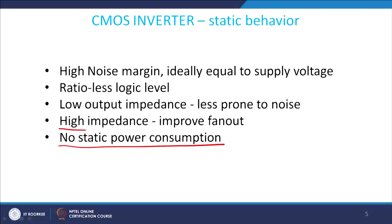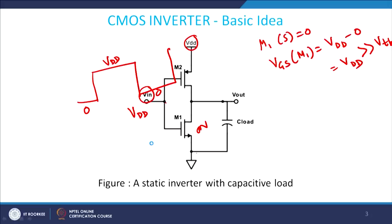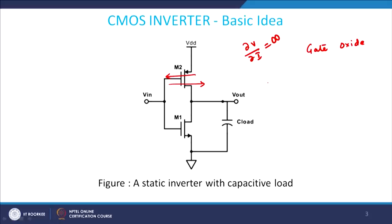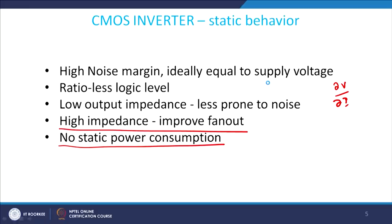High input impedance: input impedance is basically del V / del I. If you look at the structure, the input is given to the gate side of M1 and M2. Going back to the basic physics of the MOS device, the gate side has an oxide layer with a very large dielectric constant. Any signal given to the gate will have no current flowing through the oxide — it is a dielectric and an insulator — so del V / del I will be infinitely high, meaning the input impedance is very very high.